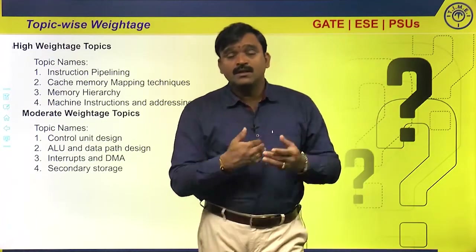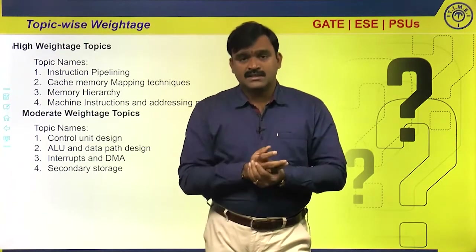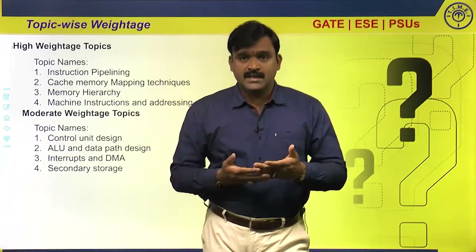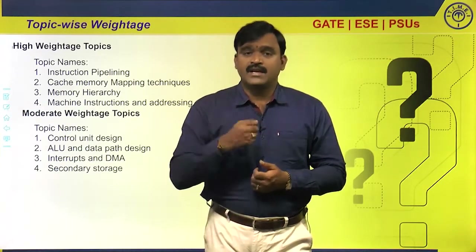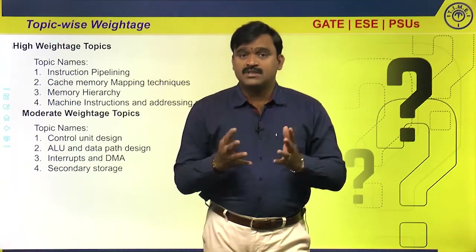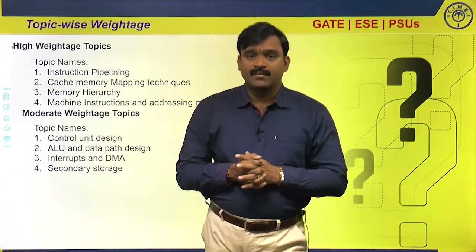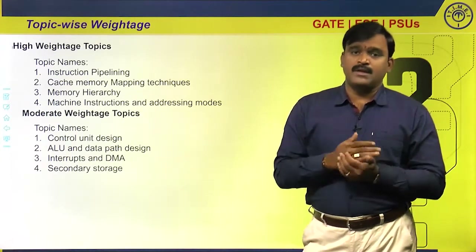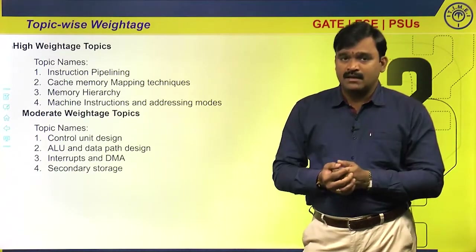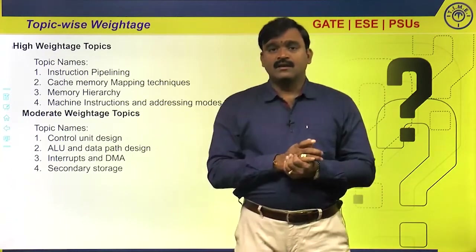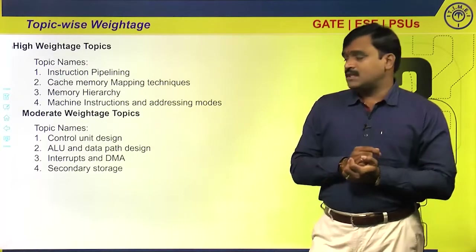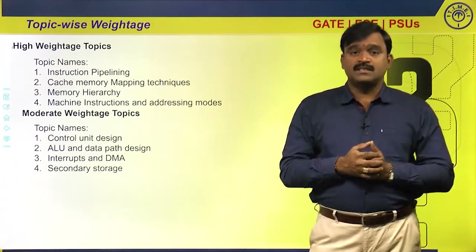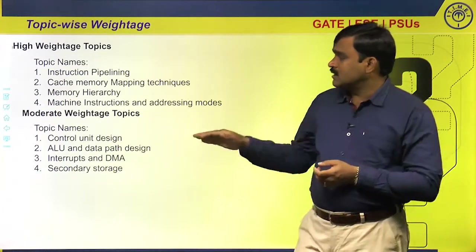For secondary storage, understand how the disk is organized, how to address the disk, and how to find disk access time — including rotational latency and seek time. Know how long it takes to access a given amount of data. Understand disk structure: cylinders, tracks, and sectors. Given data such as number of platters, tracks per platter, sectors per track, and sector size, you can find disk capacity. Disk access time is calculated from seek time and rotational latency based on RPM.